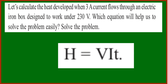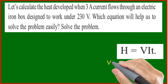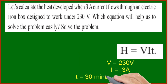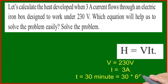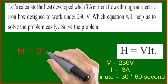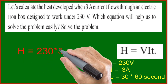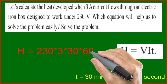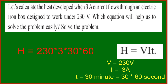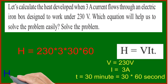H equals VIT. Voltage is 230 V, I is 3 A, T is 30 minutes — 30 × 60 seconds. H equals 230 × 3 × 60, giving H equal to 41,400 J.